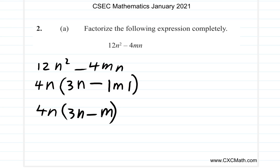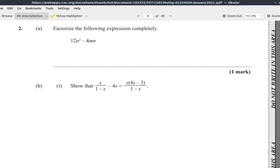What else can be done about it? Well, that seems to be it. That's 4n(3n minus m) in brackets. I don't see how it can be factorized any further. So let's continue.